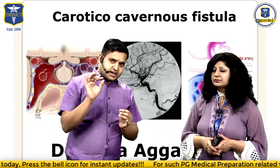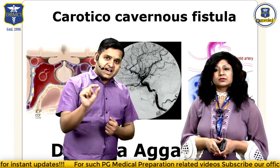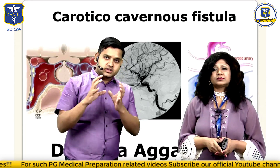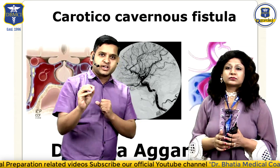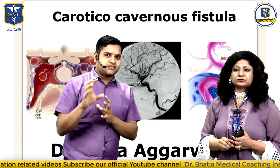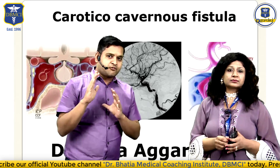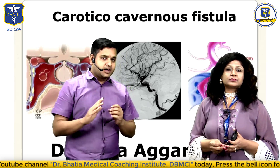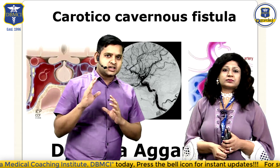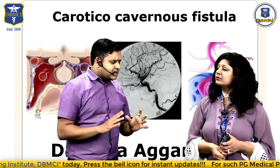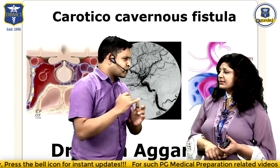The moment we see this word - mark this word, friends - pulsatile exophthalmos, because it is pulsatile, some arterial pressure is definitely coming. So the moment you see pulsatile exophthalmos, the first answer that comes to your mind should be carotico-cavernous fistula. What are the other features? One is pulsatile exophthalmos - what other features might be mentioned in an MCQ?